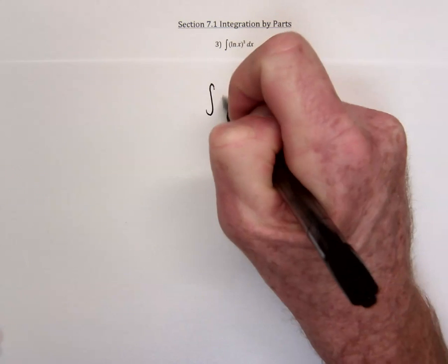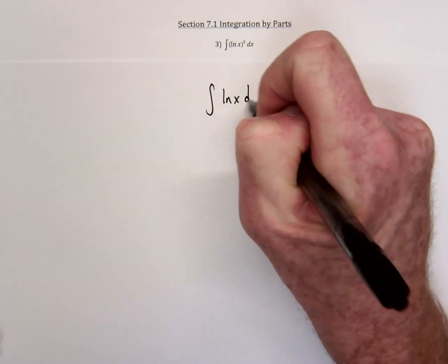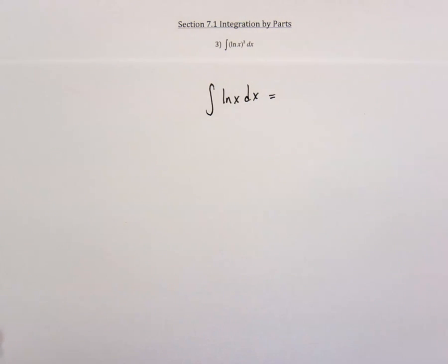One of the things we're going to need for this problem is to know the integral for the natural log of x just itself. So this is something that's done with integration by parts.